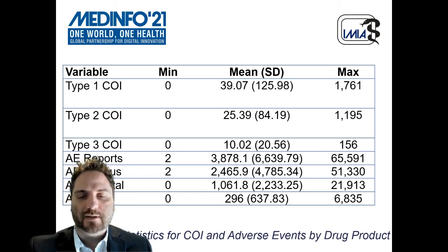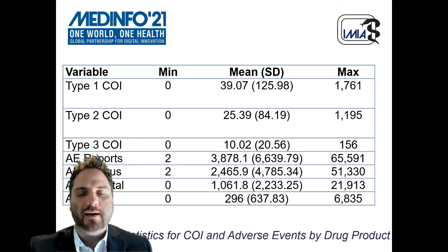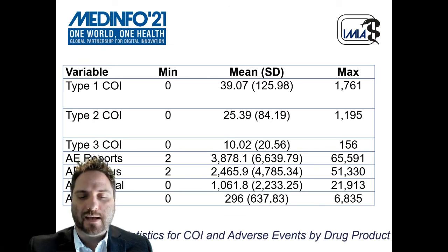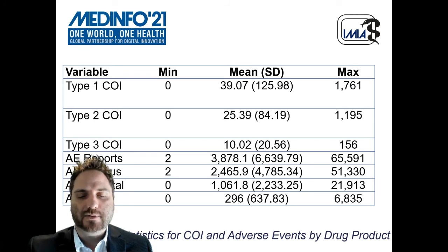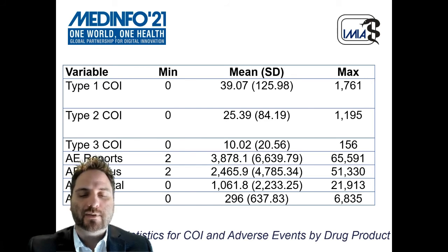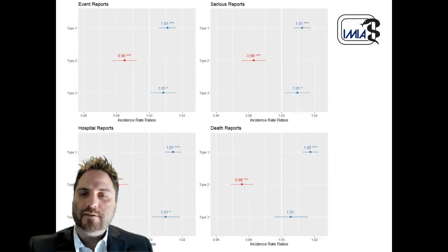For fluoxetine, there were 367 Type 1 COI, 210 Type 2 COI, and 11 Type 3 COI. FAERS reported 4,605 adverse events, 3,360 serious, 1,293 hospitalizations, and 442 deaths. Overall, the average product had 39.07 Type 1 COI, 25.39 Type 2 COI, and 10.01 Type 3 COI. The total number of adverse event reports ranged from 2 to 65,591 with an average of 3,878.1. Given the over-dispersion in the data, a quasi-Poisson regression model was used for all analyses.